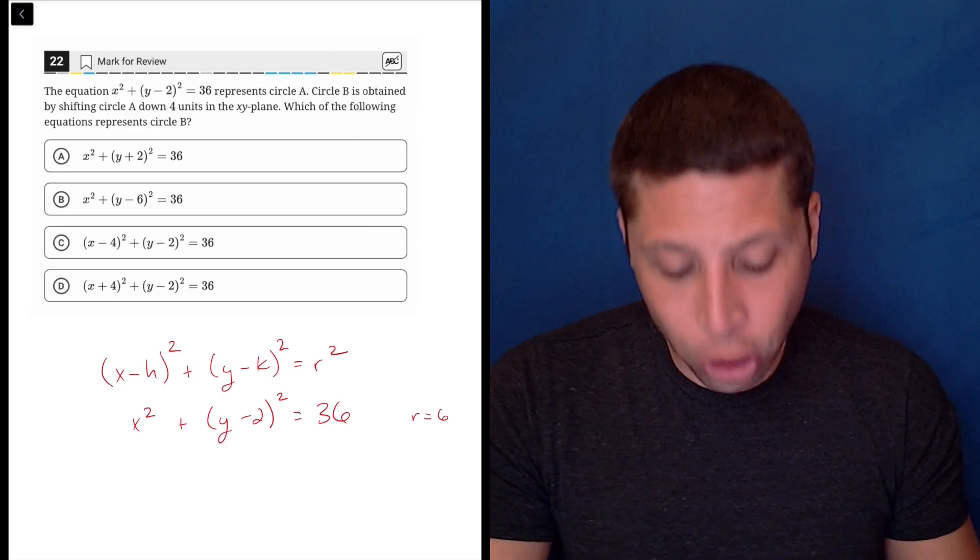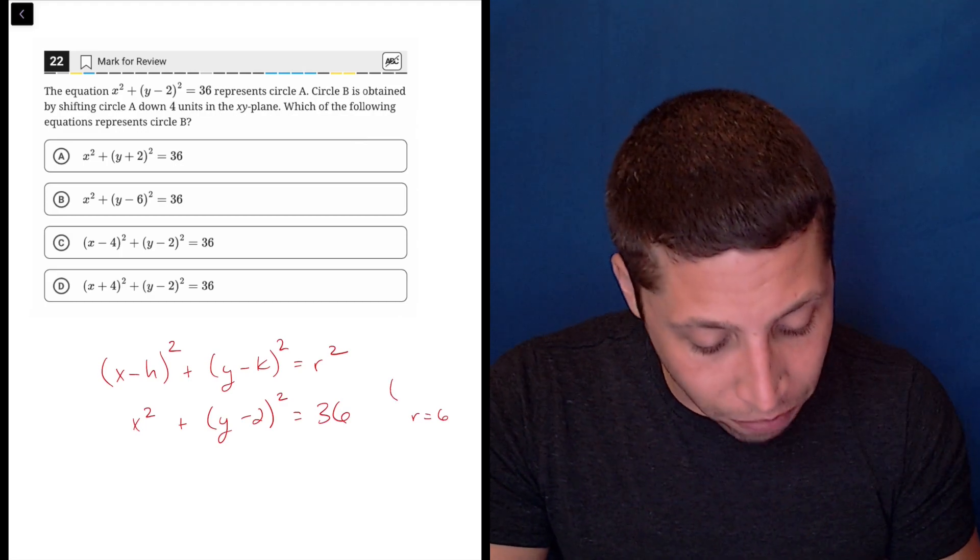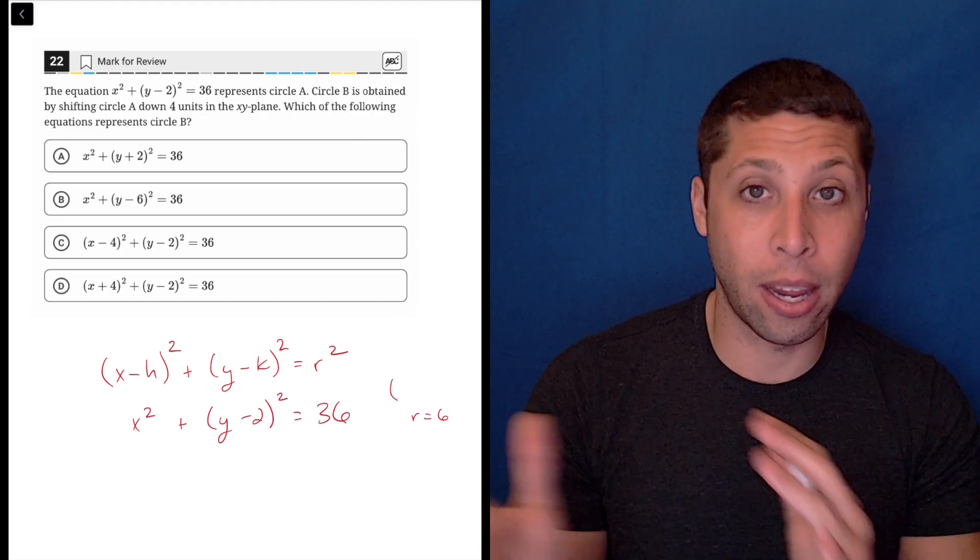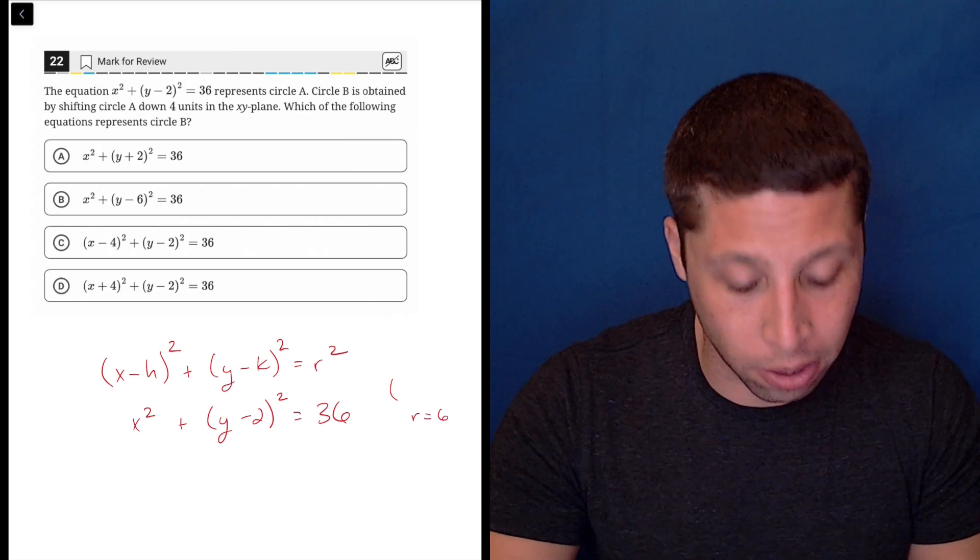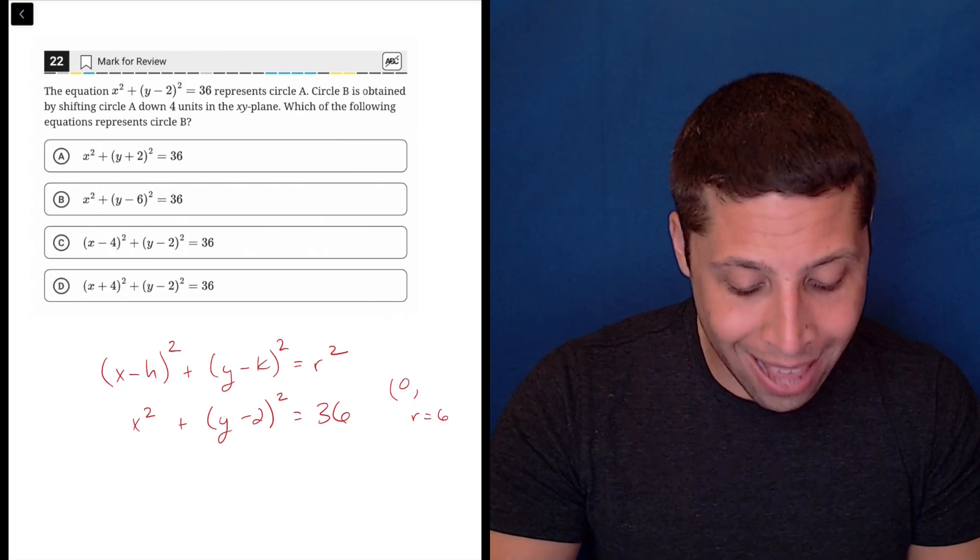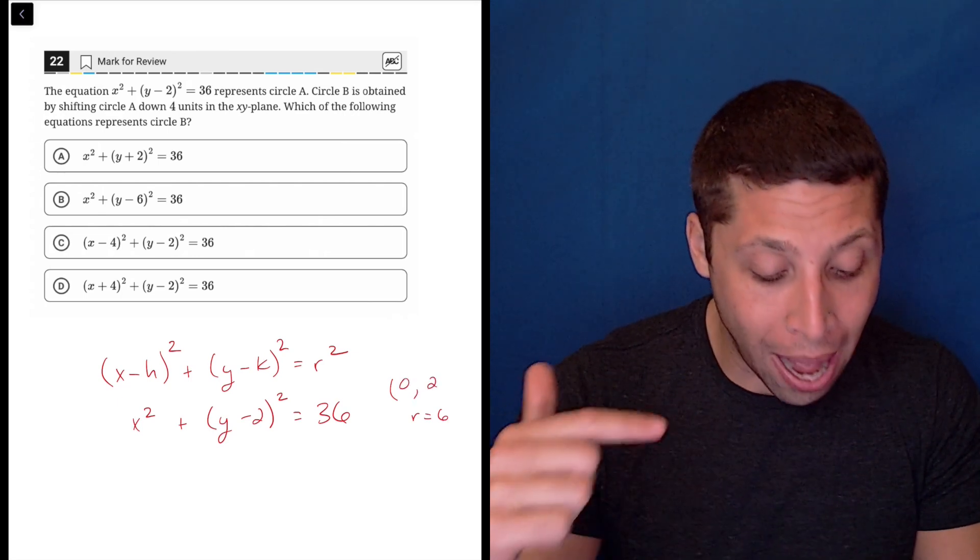And then h, k represents the center of the circle. So the fact that the x doesn't have anything with it means that the x-coordinate of the center is 0. And then the y-coordinate is 2, positive 2.